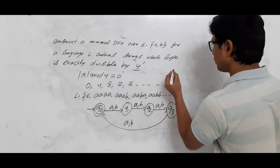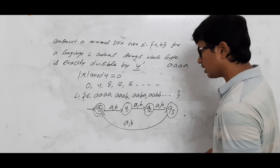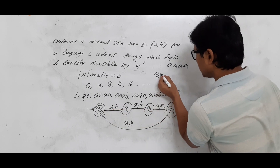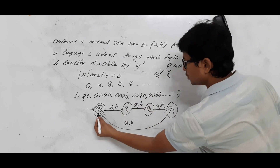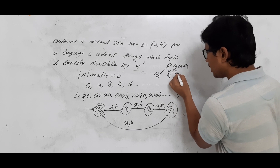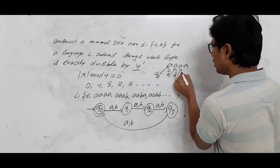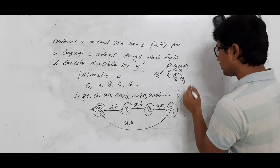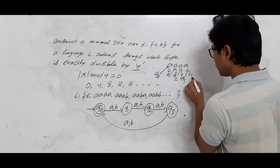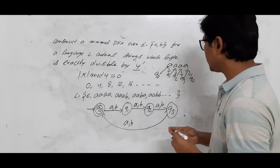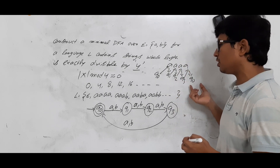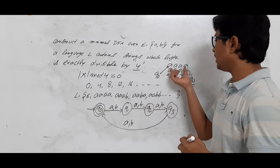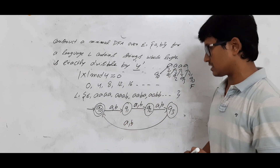Let's verify that AAAA is accepted. Starting at Q0: on A, go to Q1. Q1 on A, go to Q2. Q2 on A, go to Q3. Q3 on A, go back to Q0. After traversing the entire string, we have reached Q0, which is a final state. So the string AAAA is accepted by the DFA.